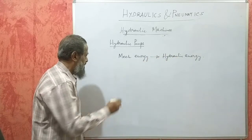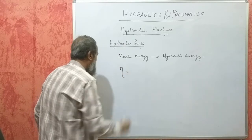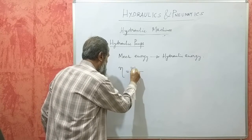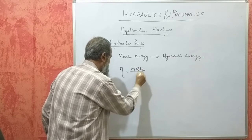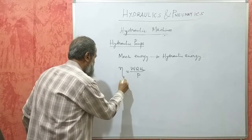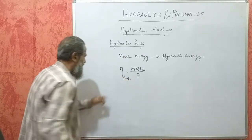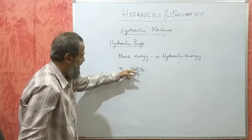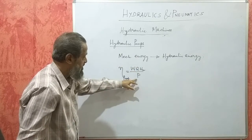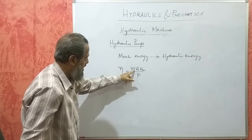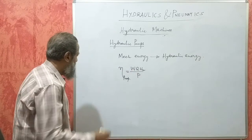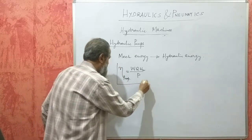The efficiency formula for a turbine is P divided by WQH. For a pump, it becomes WQH_M divided by P. The formula for efficiency of a turbine is P divided by WQH — here hydraulic energy is the input and mechanical energy is the output. For a pump, this is the input and this is the output. So WQH_M over P is the formula for efficiency of a pump.